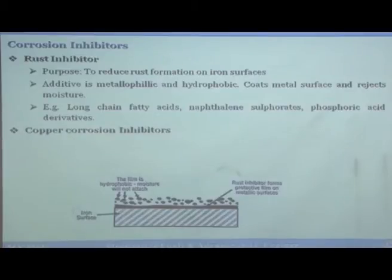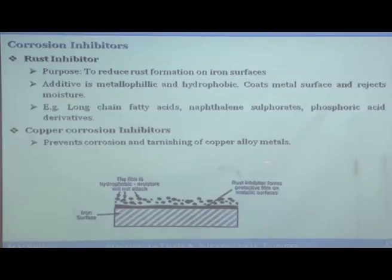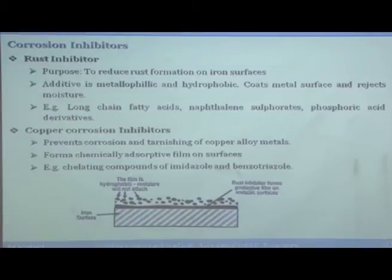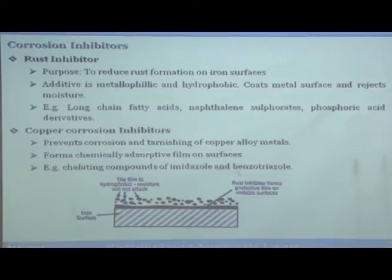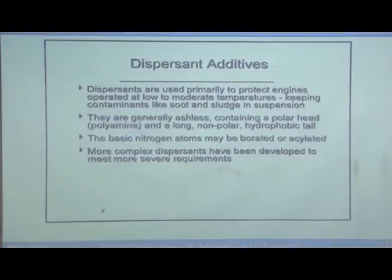Copper corrosion inhibitors prevent corrosion of copper or copper alloys, similar to how rust inhibitors work for iron. They form a chemically adsorptive film on the surface. Examples are chelating compounds of imidazole and benzotriazole.